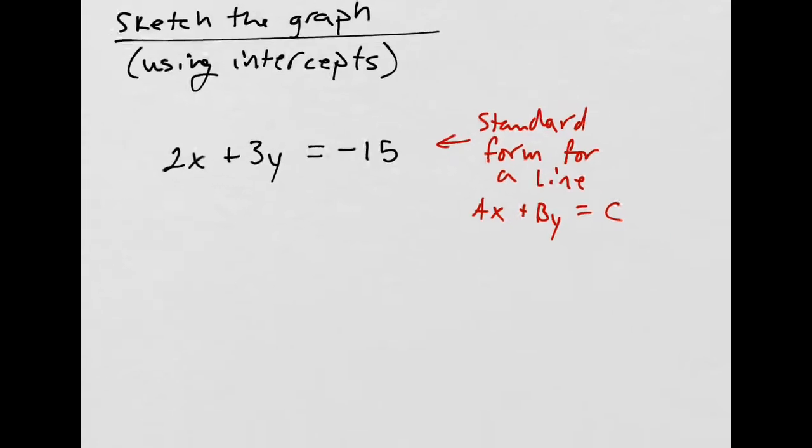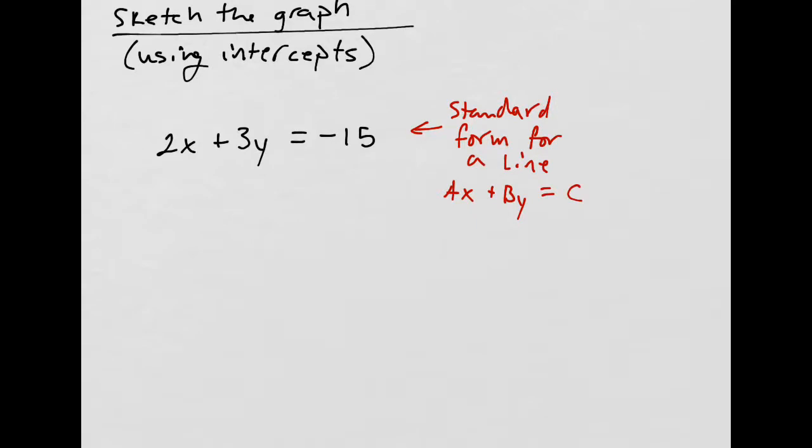And how can we graph this? Well, there's two ways to graph it. First, you could use the intercepts, that's what we're going to do, or you could change it into slope-intercept form, which is Y equals MX plus B. And I'll show you that, I think, for one example.